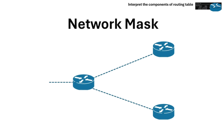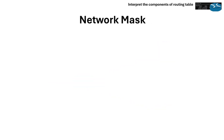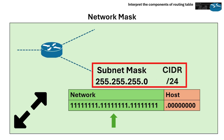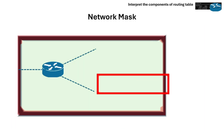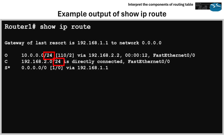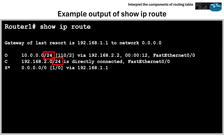Next is network mask. The network mask determines how big the network is and specifies which part of an IP address represents the network portion and which part represents the host portion. It's written either as a subnet mask or as a CIDR prefix length. The mask helps the router understand which part of the IP address to match when looking for a route. For example, /24 tells the router exactly which range of IPs this route covers.